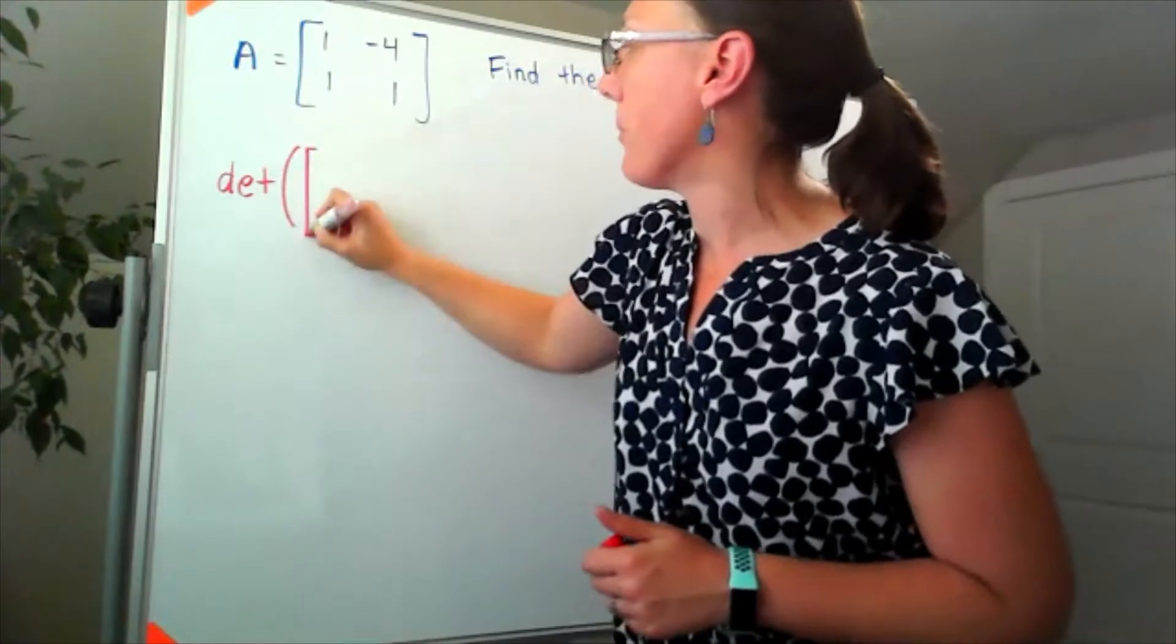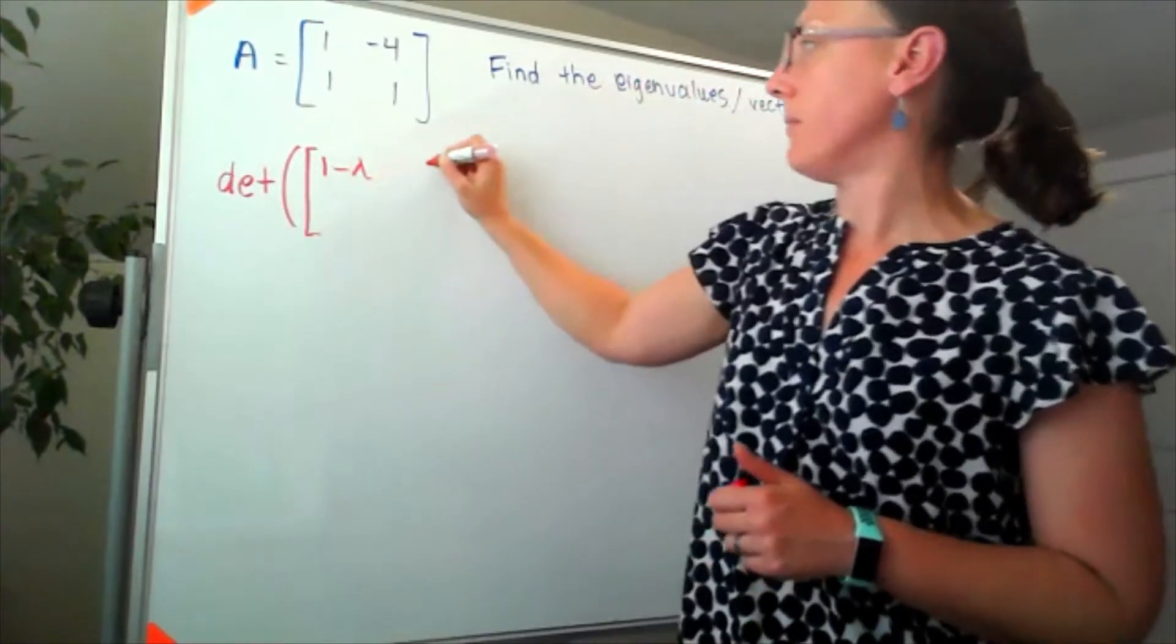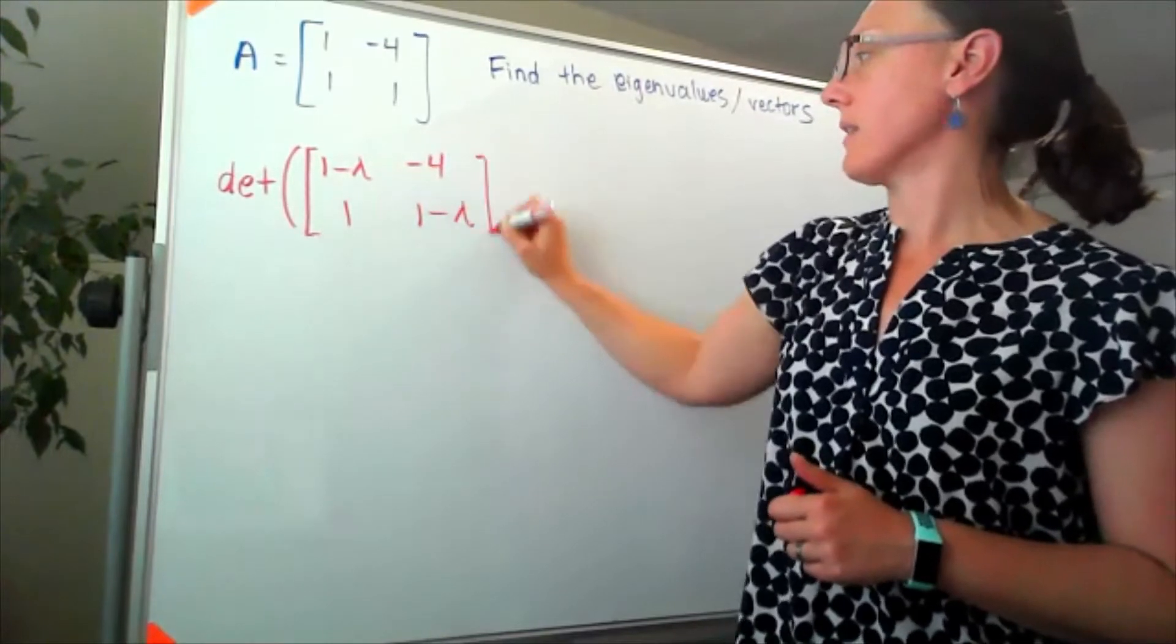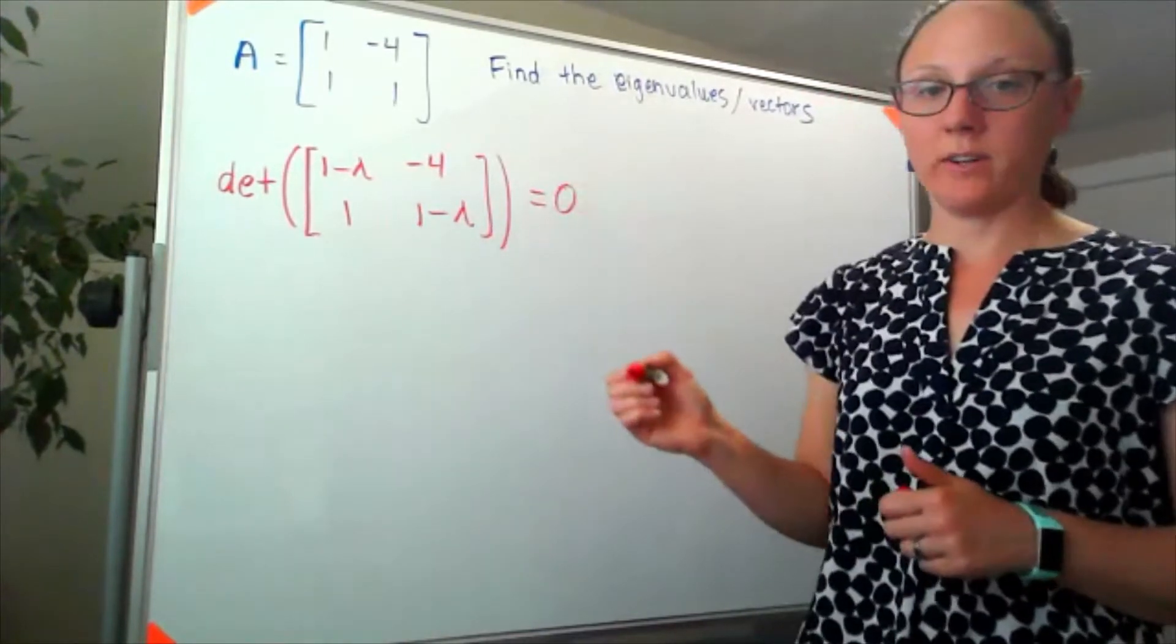So we're looking for the determinant of 1 minus lambda, negative 4, 1, and 1 minus lambda. We're going to set that equal to 0.